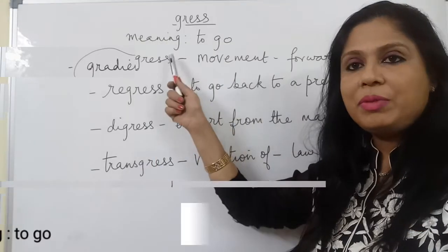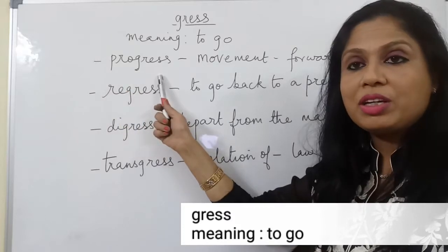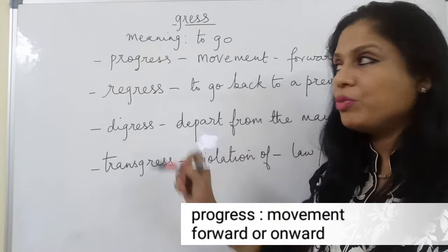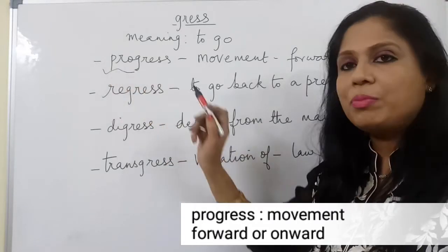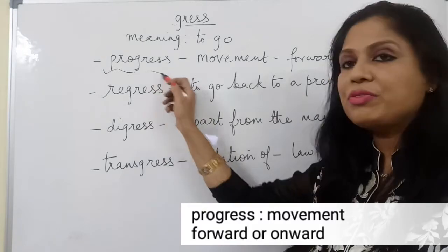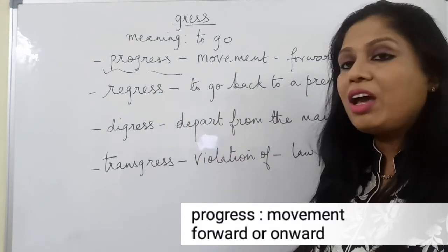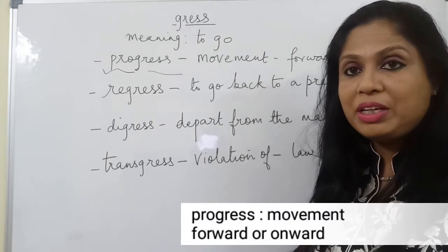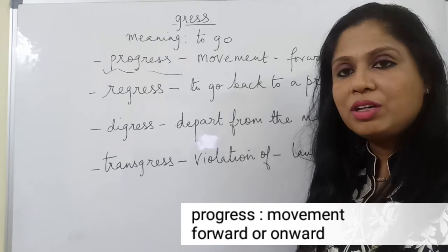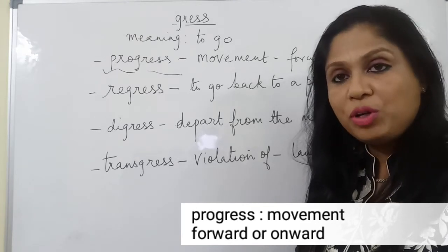The root word 'gress' means to go. The first word is 'progress'. It contains two root words: the prefix 'pro' means ahead, and 'gress' of course means to go. So, to move ahead or to make an onward journey is the meaning of the word progress. It could be a physical movement or progress in the sense of evolution.